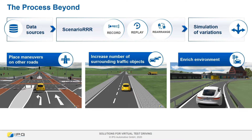At the moment, we are looking at what the process could look like in the future, which further steps are useful and what solutions we can offer. For us, there are three basic steps. Placing known maneuvers on new roads means they are placed into a new environment to create new scenarios with as little effort as possible and to increase the efficiency in the process of scenario creation.